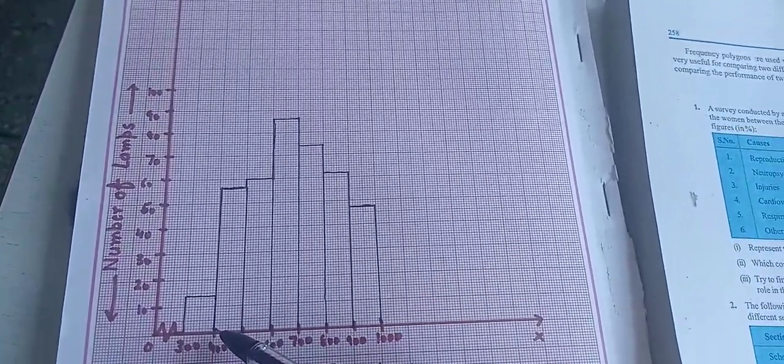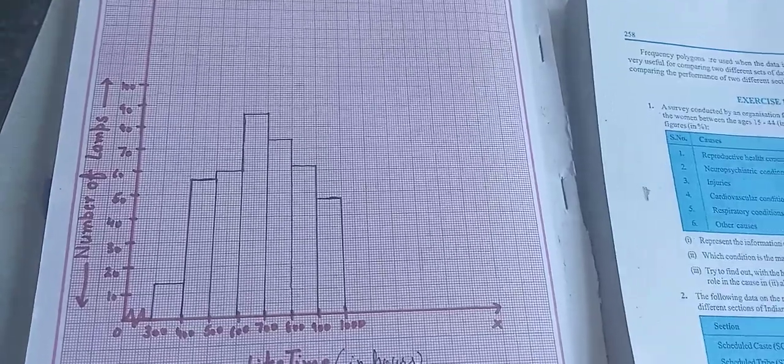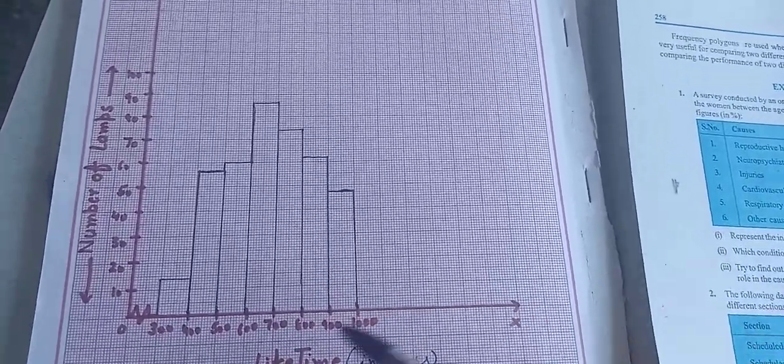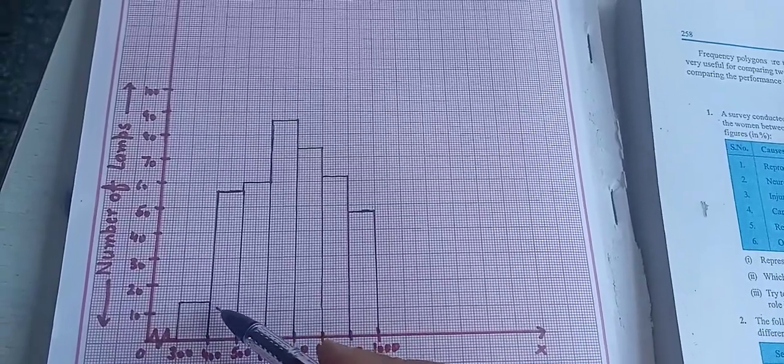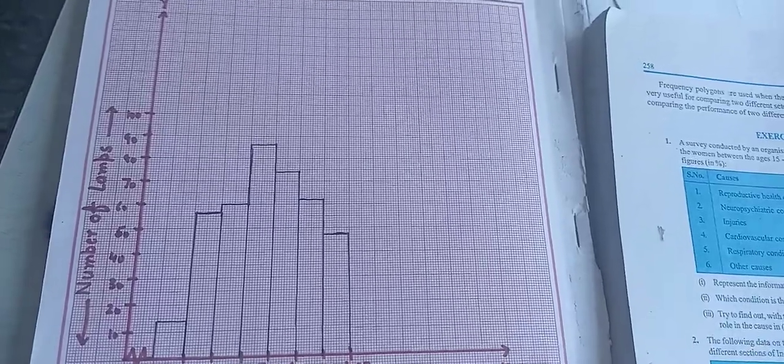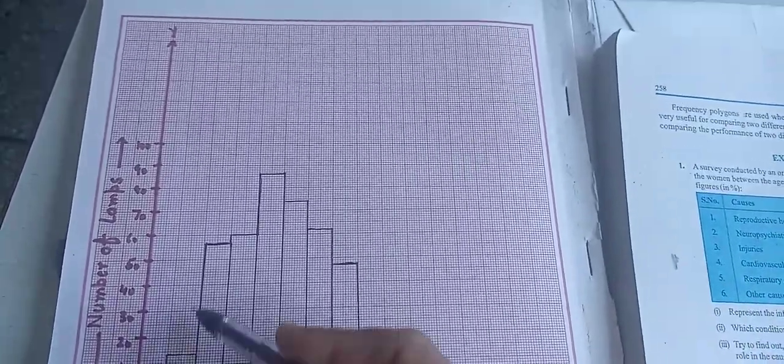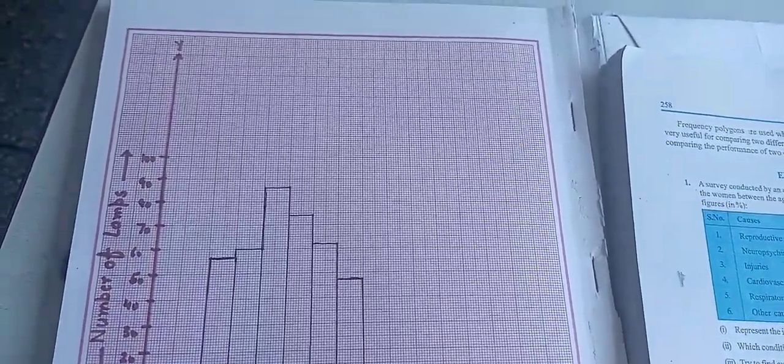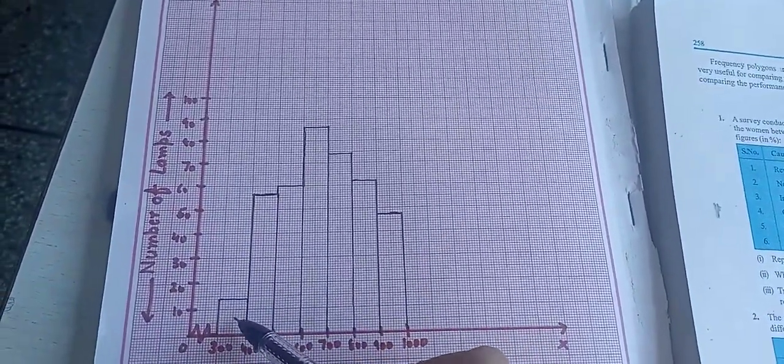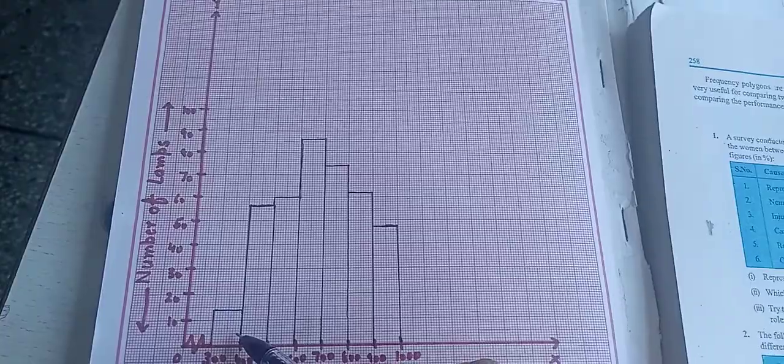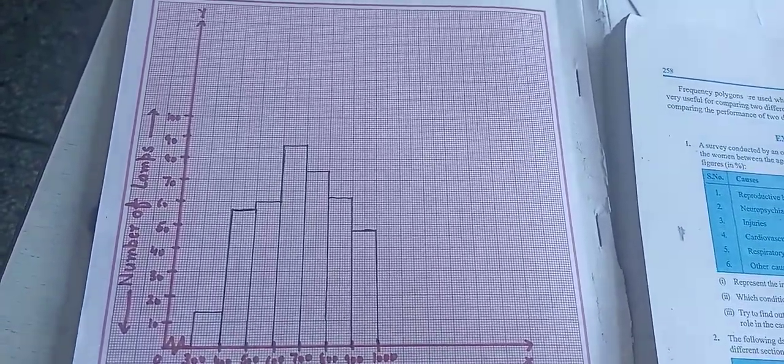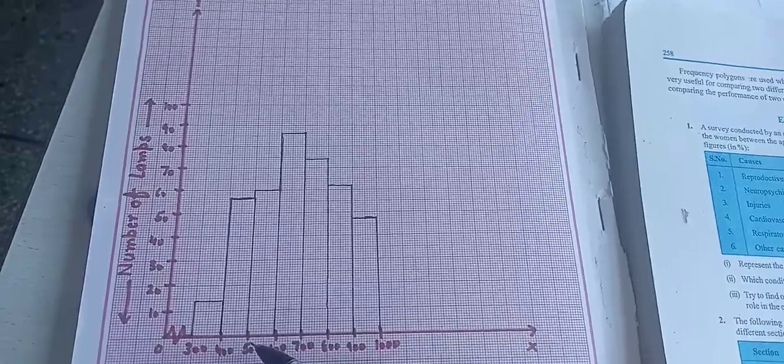300 to 400, our data is number of lamps are 14. So we will draw our first bar. Then 400 to 500, our lamps are 56. We will draw this one 56. Now just see, there is no gap in between. Clear? So this way you will use your table and represent it on the graph.